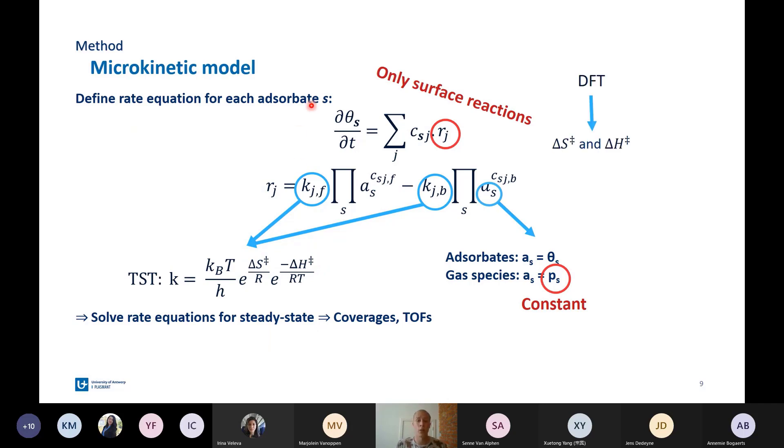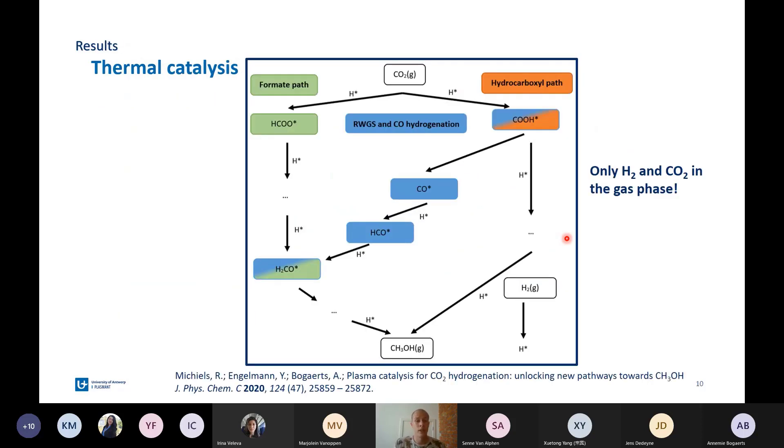Once we have defined all these rate equations for every adsorbate S, we can solve these for steady state, which will then yield us the theta, which is a steady state coverage, and we can then use this to calculate rate reaction rates, turnover frequencies, and analyze the pathways. Then we first run the model for thermal catalysis to analyze those pathways, and in thermal catalysis there is only CO2 and H2 in the gas phase, so there is no effect of the plasma incorporated.